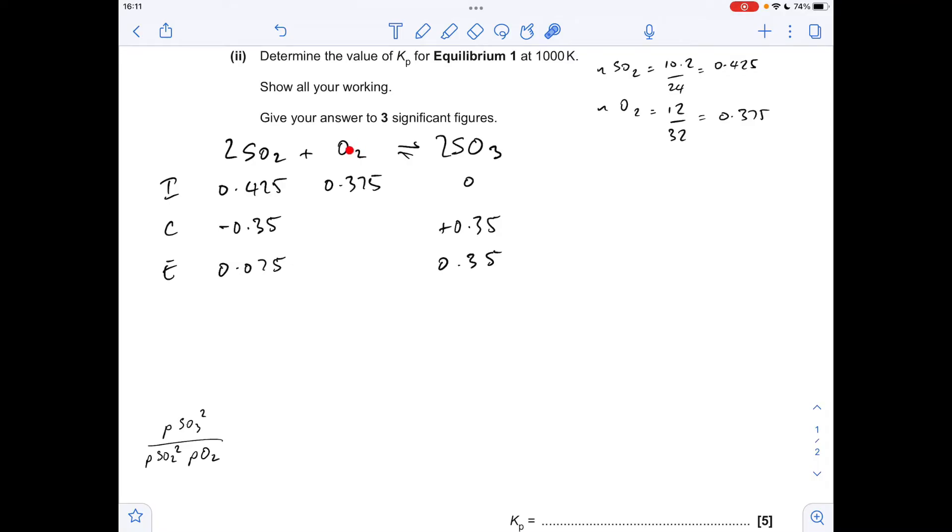In terms of the O2, that's going to lose half as many moles because of the ratio, which means there's 0.2 moles of O2 left. So the next thing we'll do is work out the total moles at equilibrium, which is 0.625, and that means we can calculate the mole fractions of all the chemicals. It's just the moles at equilibrium divided by the total moles. So there's the mole fractions.